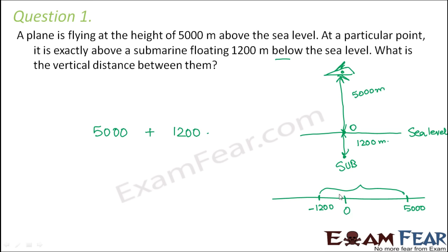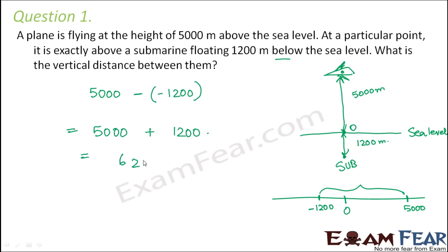You might ask why plus 1200m and not minus 1200m. Even if you consider the negative sign, it would be 5000 minus (minus 1200), which means the same thing. So 5000 plus 1200 gives 6200m. That is the vertical distance between the two.